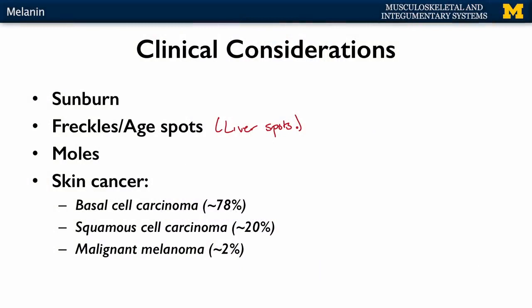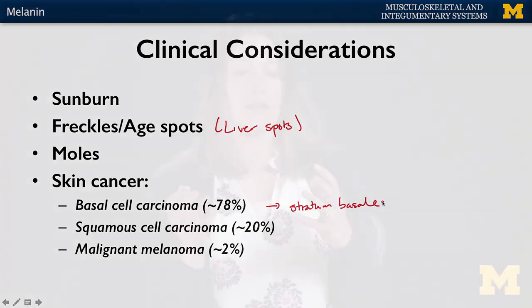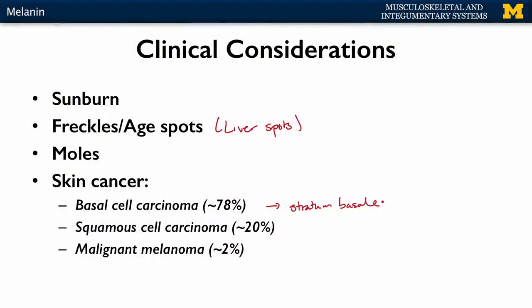The most frequent type of skin cancer is basal cell carcinoma, which starts with cells in the stratum basale. It is the most frequent but also the least serious type of skin cancer. It can lead to malignancy, but if there is removal of that portion of the skin, there is a high incidence of survival. Squamous cell carcinoma typically originates in the stratum spinosum and is intermediate in both frequency and mortality.